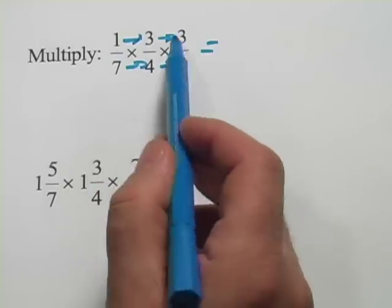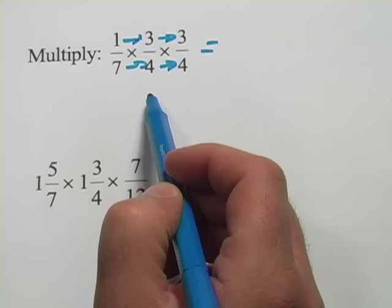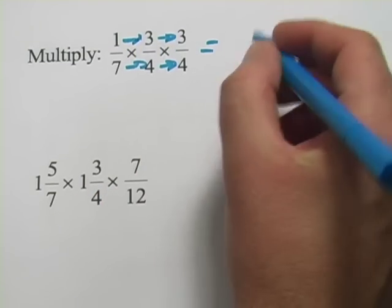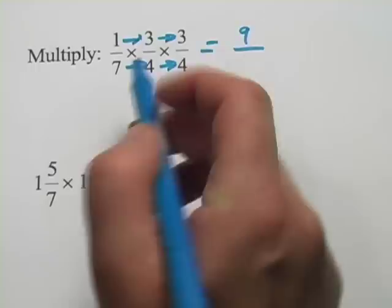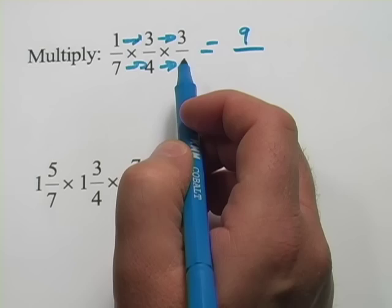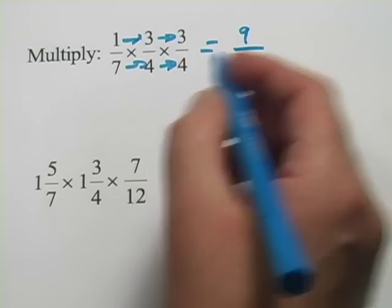In this case I don't think we can. I don't see any of the same numbers on the top that are on the bottom. So let's go ahead and multiply. 1 times 3 times 3, that's 9. And 7 times 4 times 4, so 28 times 4, that's 112.